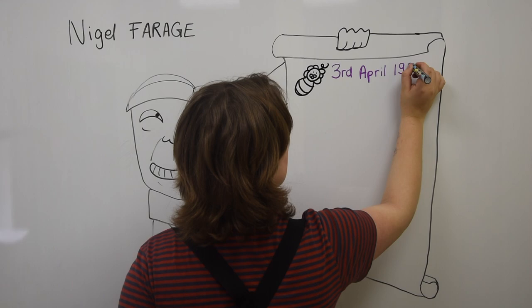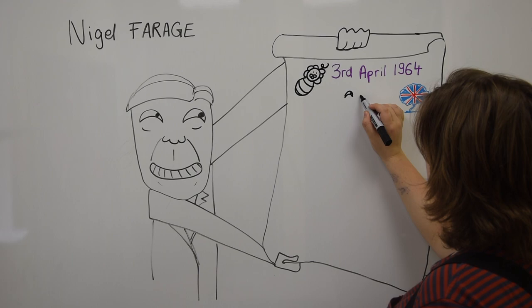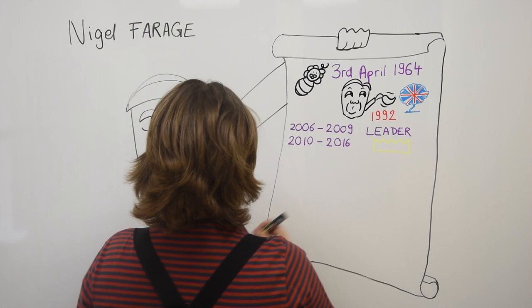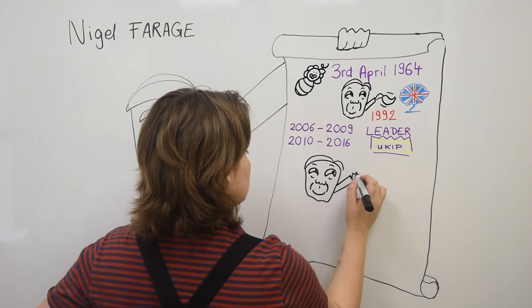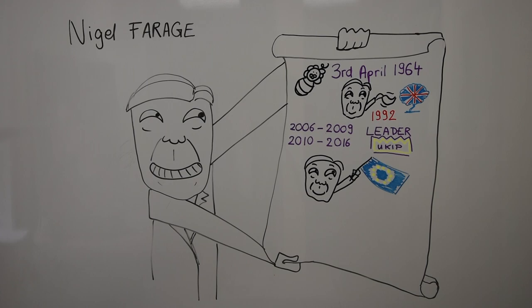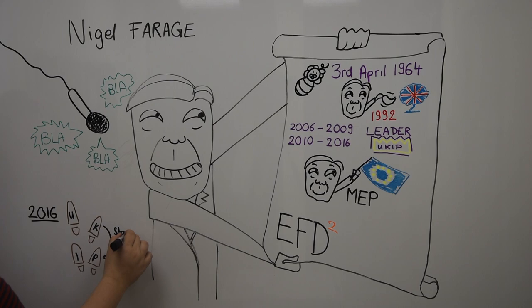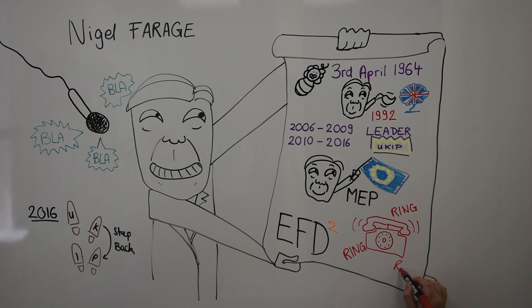He is born on the 3rd of April 1964. He left the Conservative Party in 1992 and was one of the former leaders of UKIP. He was leader of UKIP from 2006 to 2009 and from 2010 to 2016. He is a member in Parliament at the European Parliament and part of the Eurosceptic Party called Europe of Freedom and Direct Democracy. He is particularly known for his arrogance and provocative speeches. In 2016, he decided to take a step back from UKIP. In 2018, he started a new show in which he answers questions and explains his point of view.